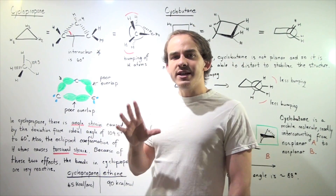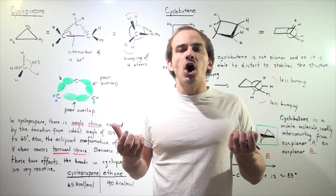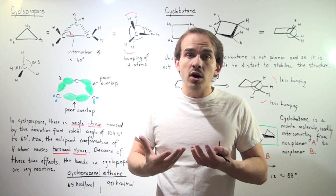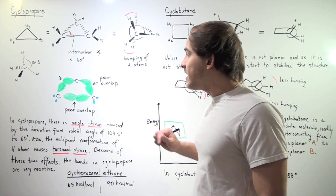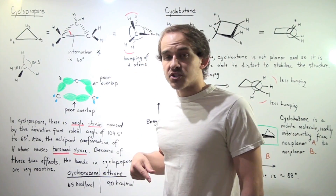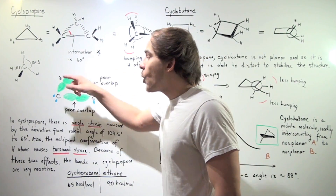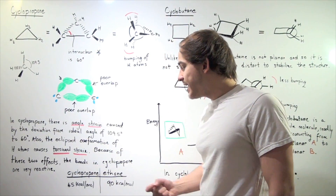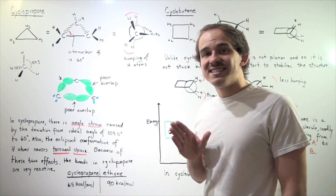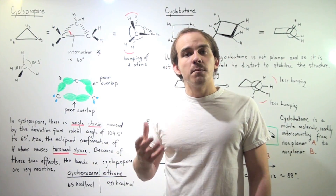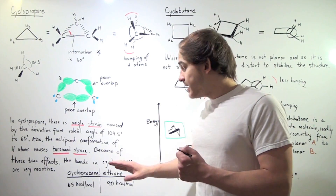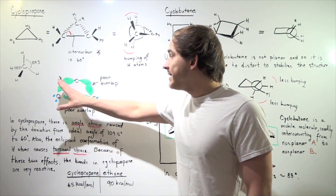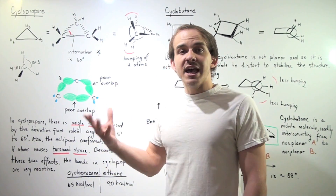In another lecture, we noted that bonds are formed by the overlap of atomic orbitals — the better the overlap, the more stable and stronger the bond. In cyclopropane, there is very poor overlap between the orbitals, making the bonds rather weak. Comparing carbon-carbon bonds: in ethane it takes 90 kcal/mol to break the bond, but in cyclopropane only 65 kcal/mol, meaning this bond is significantly weaker than in ethane.